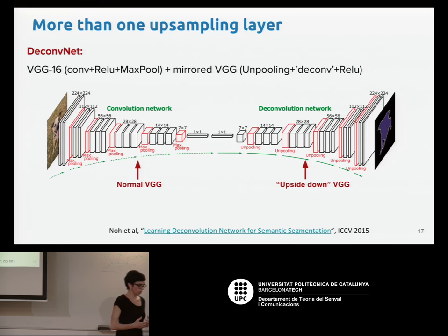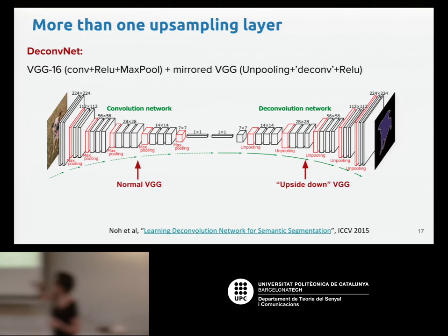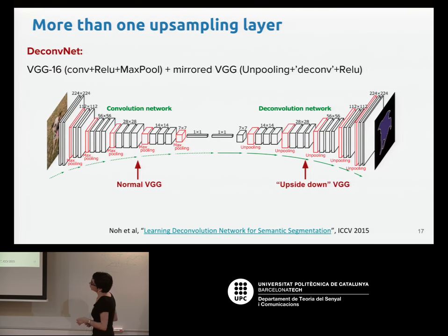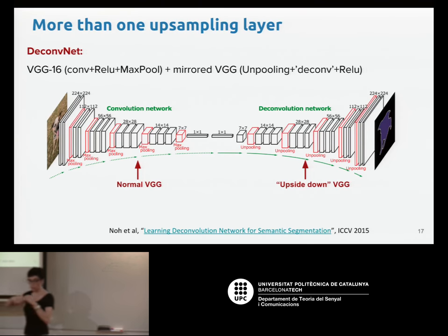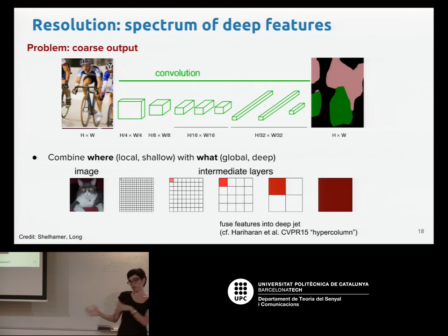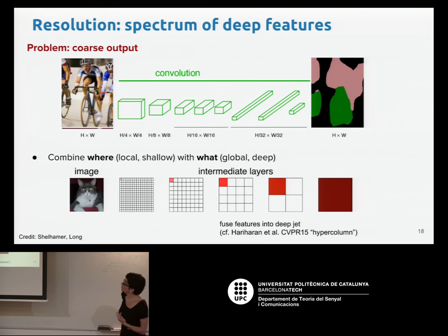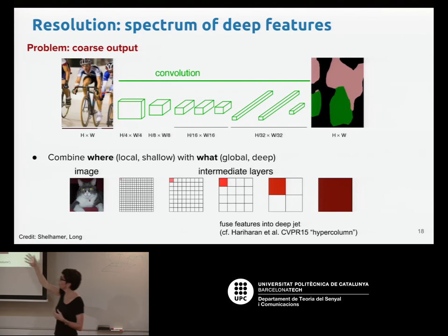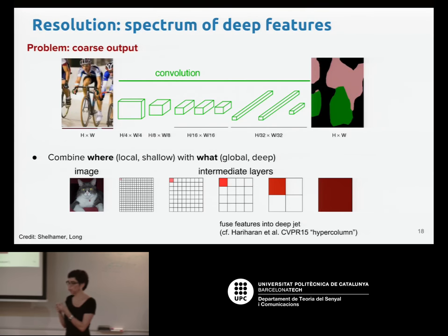There are other proposals for performing upsampling. For instance, the model called SegNet proposes using the usual convolution path with a normal VGG at the beginning, and then instead of one big upsampling at the end, several small upsampling operations, forming a symmetric net. This was proposed at ICCV 2015. This solves the first problem — making the output the same size as the input.